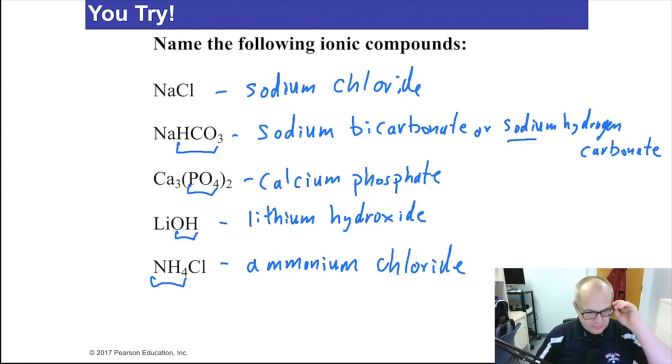Naming ionics is very simple. Just name the cation, name the anion, you're done. There's nothing harder than that. Ionics are very simple. You know you have an ionic when generally speaking, you have a metal. That's one good giveaway. Or a polyatomic ion.